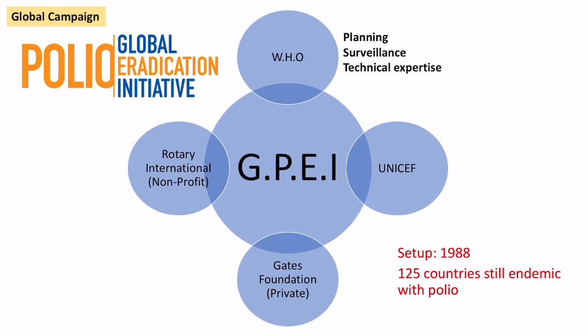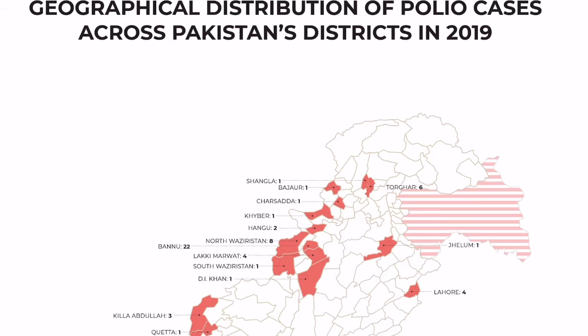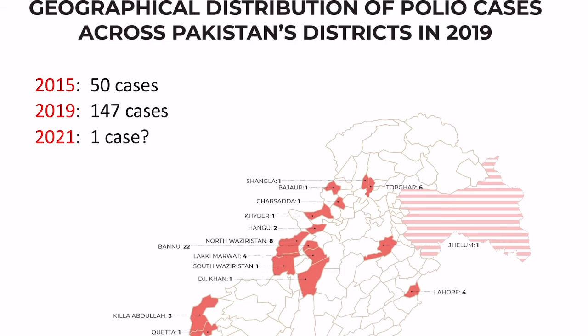Since 1988 there has been a significant drop in cases, with only two endemic places remaining. In Pakistan, there were 50 cases in 2015, which rose to 147 in 2019, and is now down to one case — showing it's an unstable region where numbers could rise or fall again.